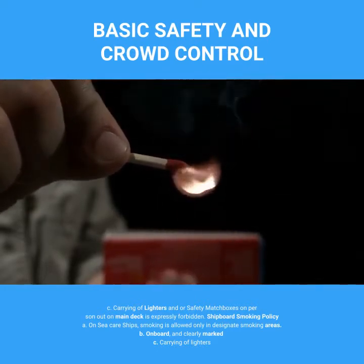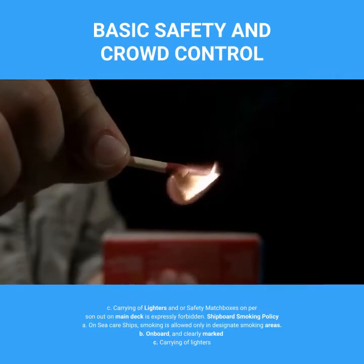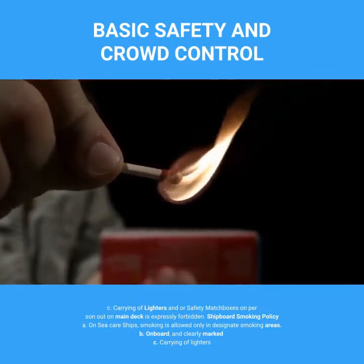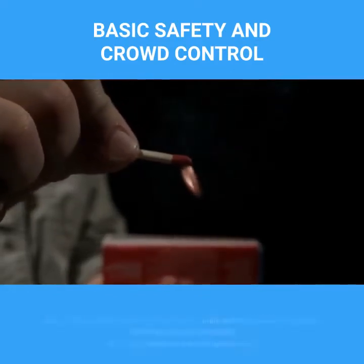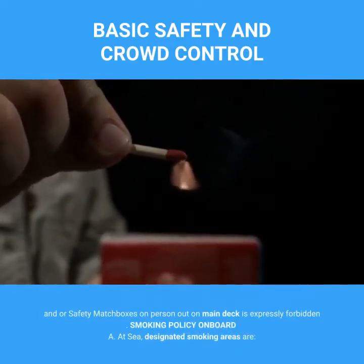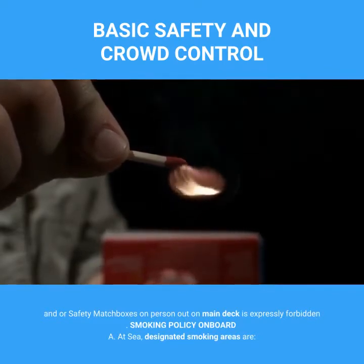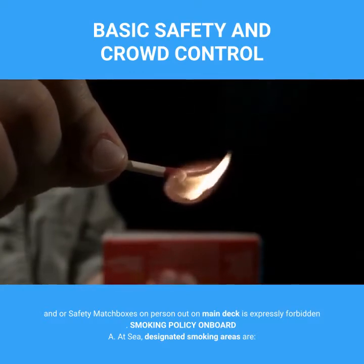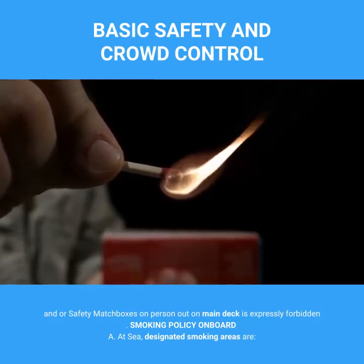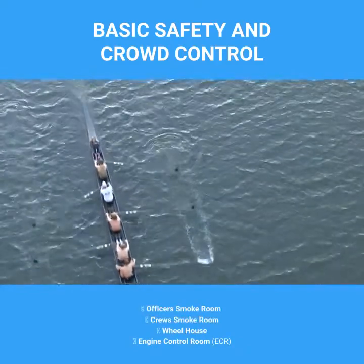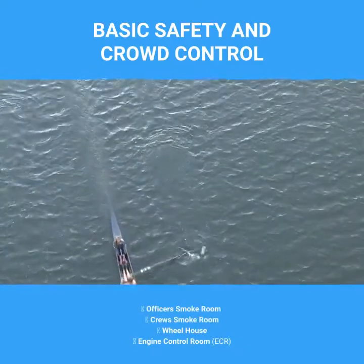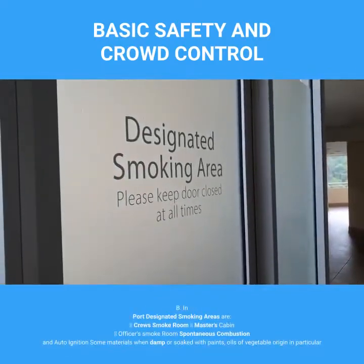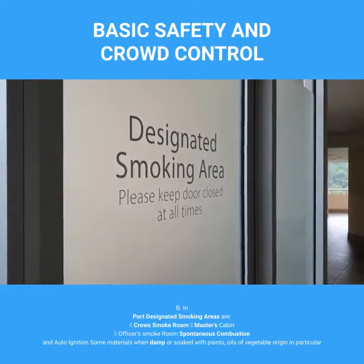Shipboard smoking policy: On sea, smoking is allowed only in designated smoking areas, and carrying of lighters and safety matchboxes on person out on the main deck is expressly forbidden. Designated smoking areas at sea include the officer's smoke room, crew smoke room, wheelhouse, and engine control room (ECR). In port, designated smoking areas are the crew's smoke room, master's cabin, and officer's smoke room.